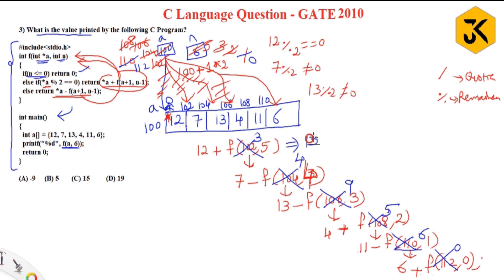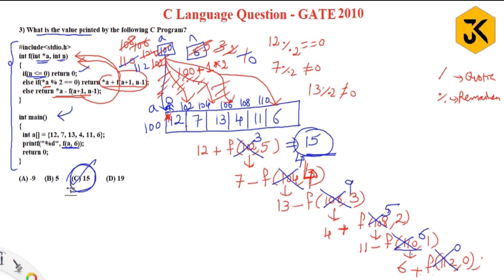Finally, 12 + 3 = 15. So printf('%d', f(a, 6)) prints 15. The answer is 15, so option C is correct. I hope you understood this one — thank you.